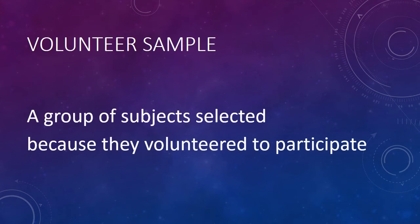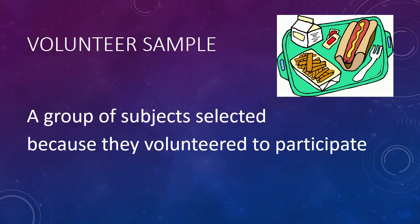A special type of convenience sample is a volunteer sample, where subjects are selected because they volunteered to participate — for example, a poll on the internet where people go to a website and take a poll, or most medical research. In volunteer samples, people have different motivations for volunteering, and some of those motivations could be related to the variables under study — that is, they could be lurking variables. For example, suppose the administration of Regis University puts a poll on the Regis website to determine how students feel about cafeteria food. Students who feel particularly strongly about the cafeteria, either favorably or unfavorably, are more likely to fill out the poll than students who don't feel strongly. The results will likely show more extreme views than the views of the entire population of students.